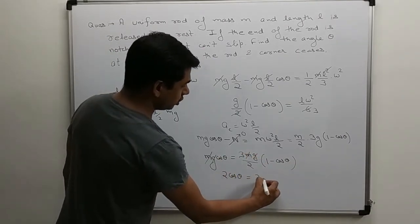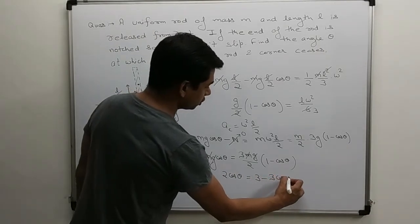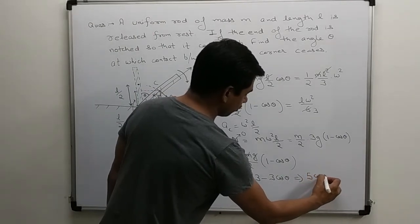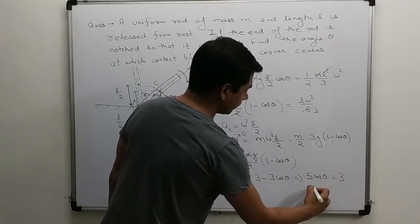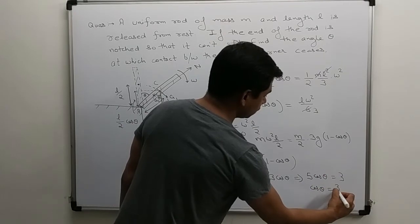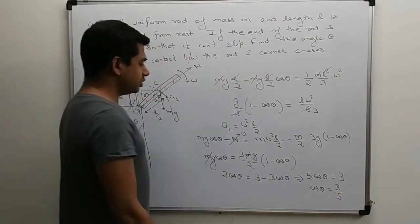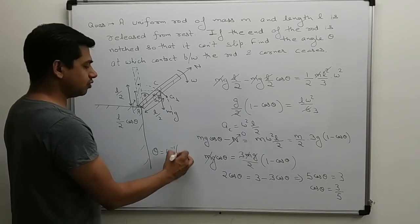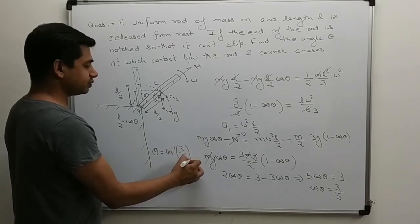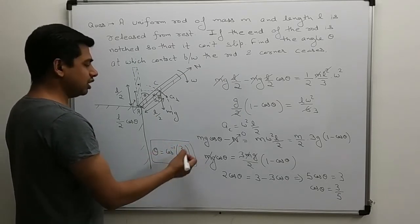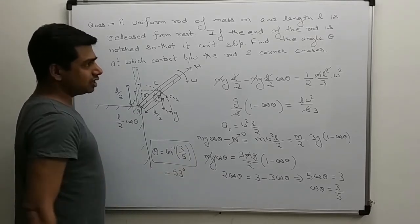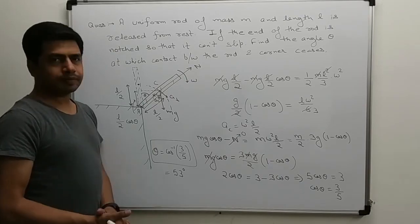2 cos theta is equal to 3 minus 3 cos theta. Taking 3 cos theta to left hand side, 3 plus 2 is 5. So 5 cos theta is equal to 3. So cos theta is 3 by 5. Theta will be cos inverse of 3 by 5, which is 53 degrees. So answer is 53 degrees. Thank you so much.